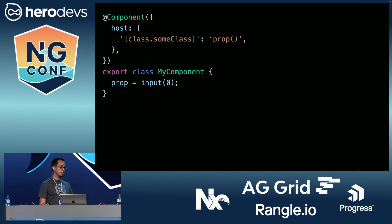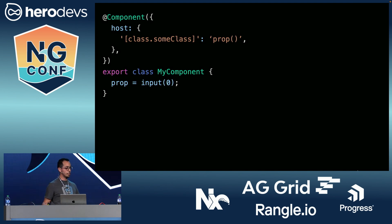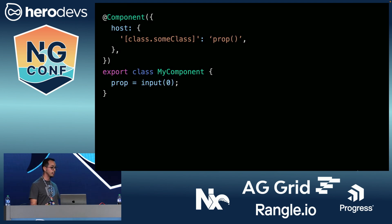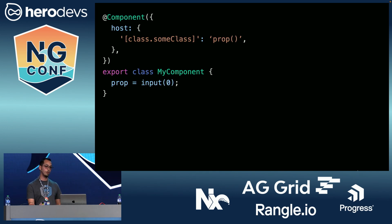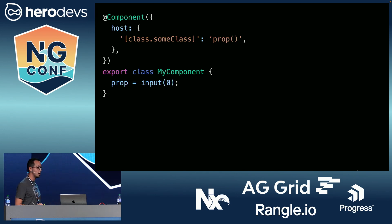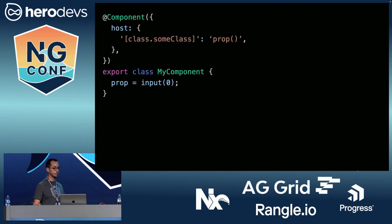And of course, with those shiny new signal APIs, we can make some more dynamic bindings — places where we would have wished we could bind to an observable. Now we can achieve the same thing with signals.